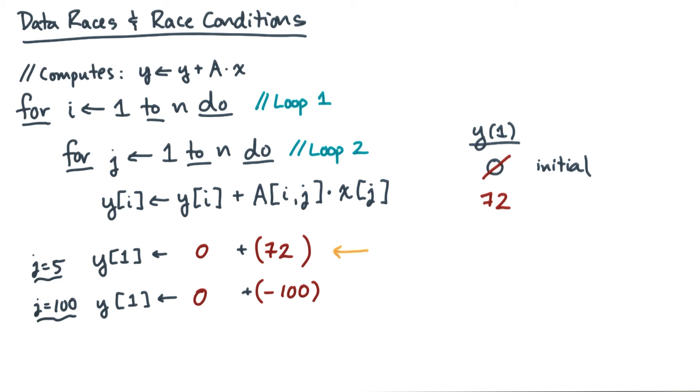But in the meantime, the j equals 100 statement is operating with the stale value of y. So when we do this sum, we'll get minus 100, and when we do the write, we'll overwrite the value of 72 instead of accumulating it. So it's clearly an error.